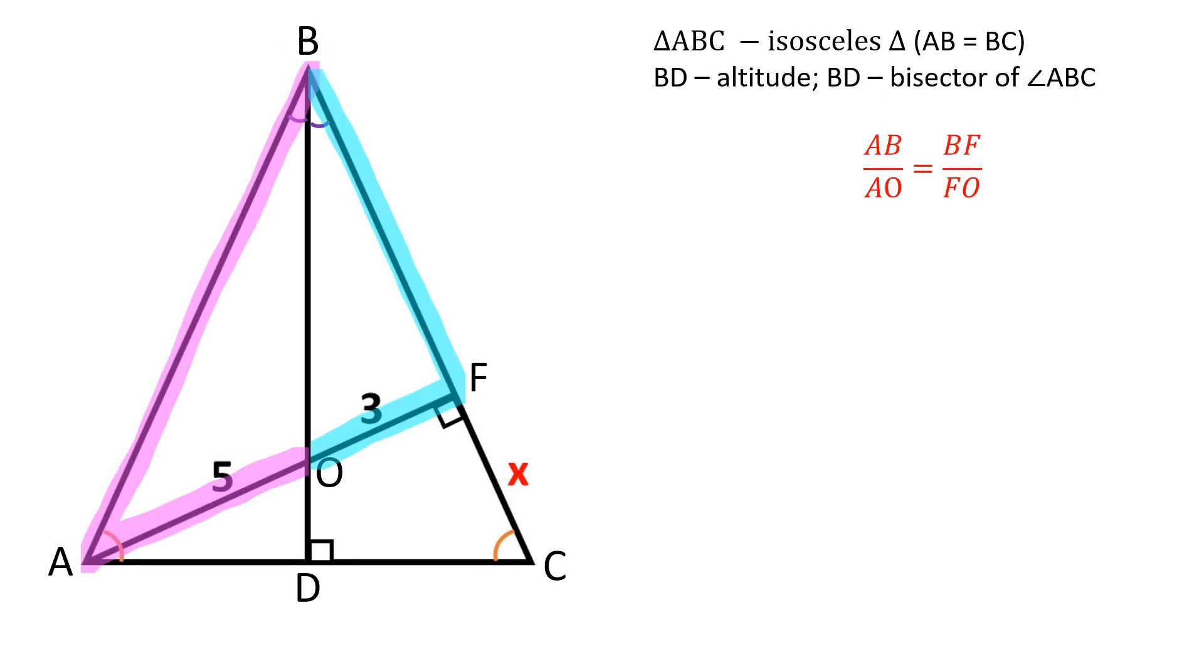By the angle bisector theorem, AB over AO is equal to BF over FO. If you're not familiar with the angle bisector theorem, please check my video on this topic in the description below.